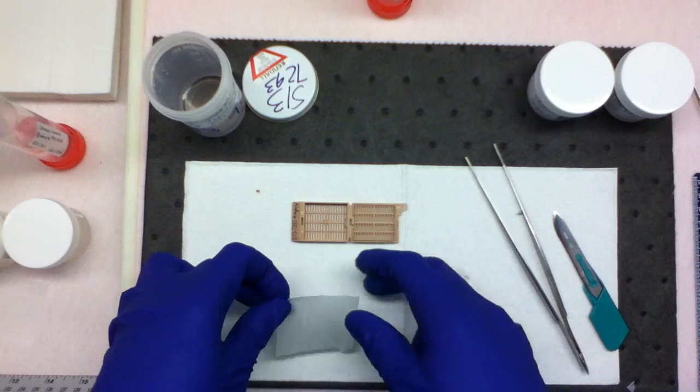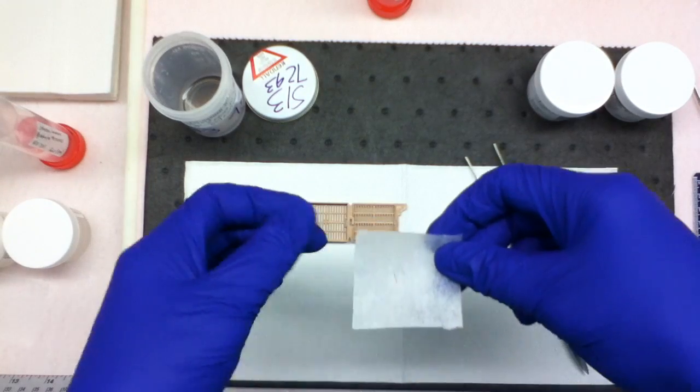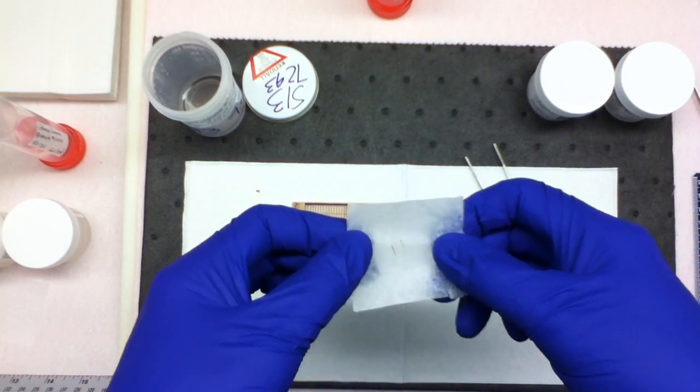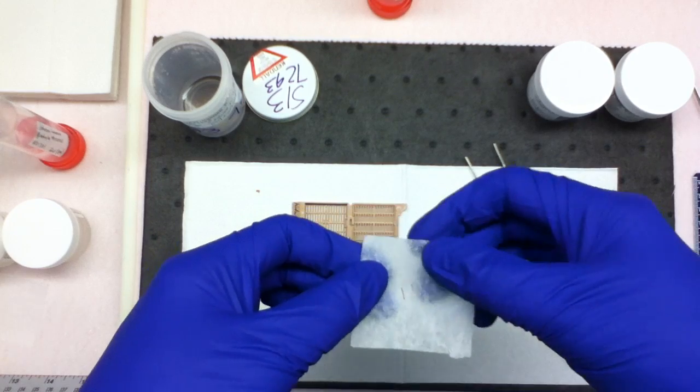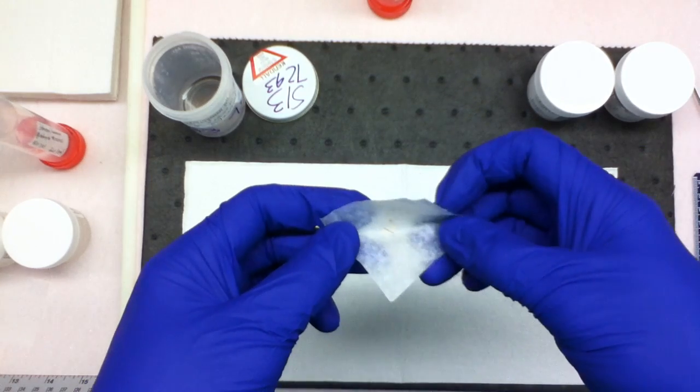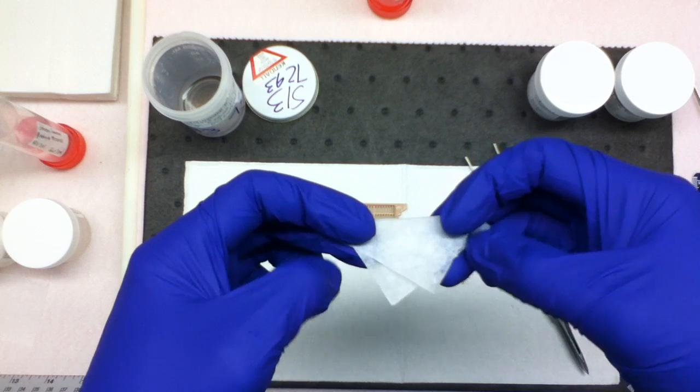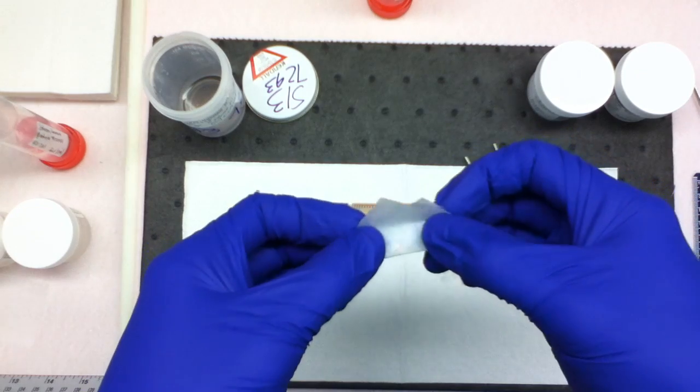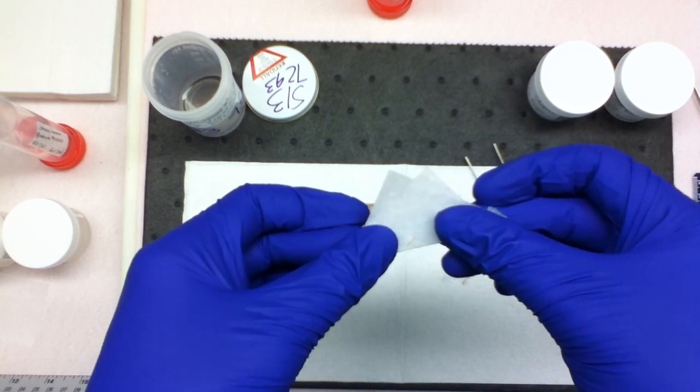When you fold up these lens papers, you don't want to match up the corners like you're folding a sheet. You actually want to have the corners overlap. I'm going to fold it like this, so you see these two corners are not matched up.